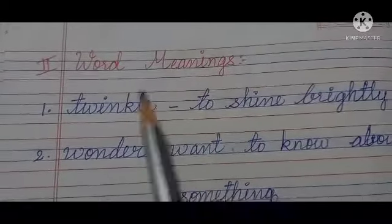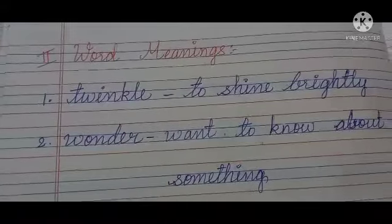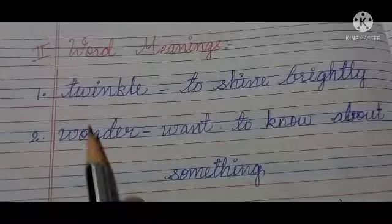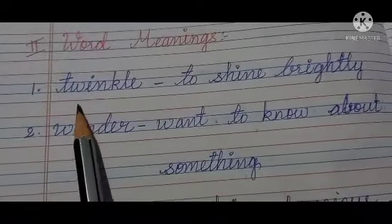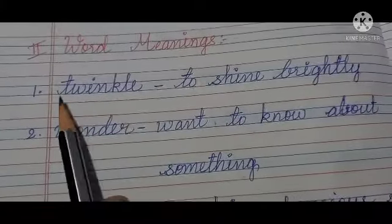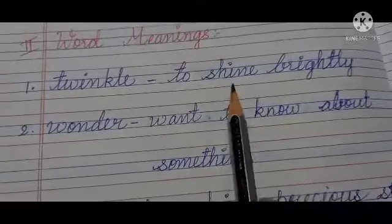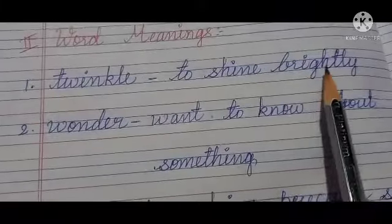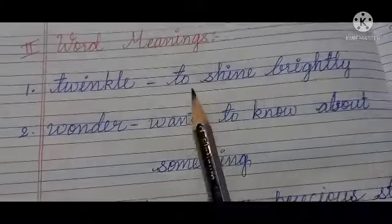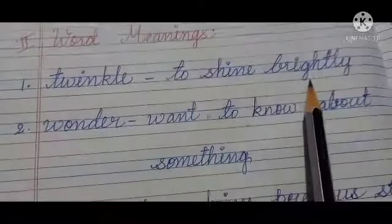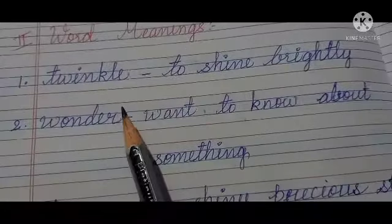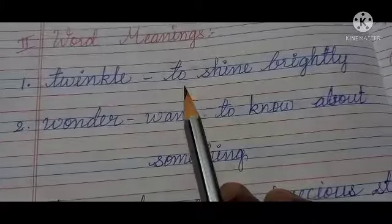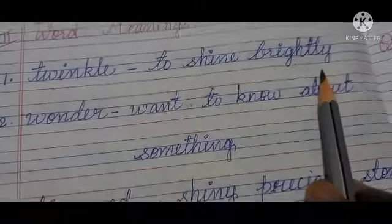Next: word meanings. Write and practice this section also. Twinkle means blinking — to shine brightly, flashing on or off very quickly. Twinkle means just flashing lights, to shine brightly. Wonder means want to know about something — to be excited, surprising, want to know about something.